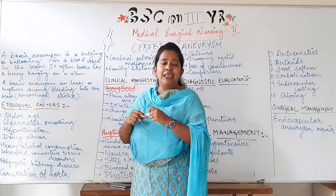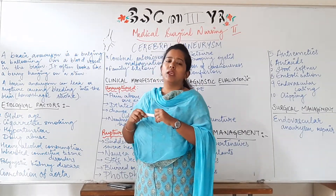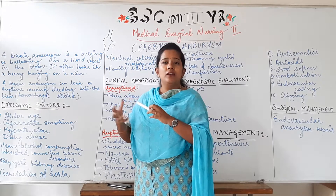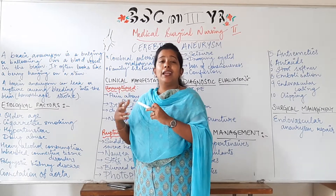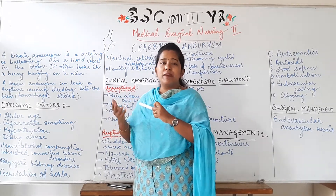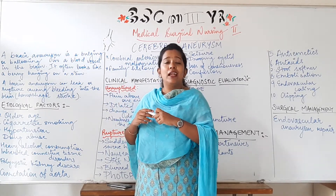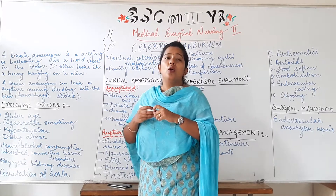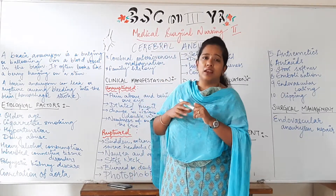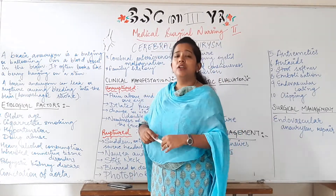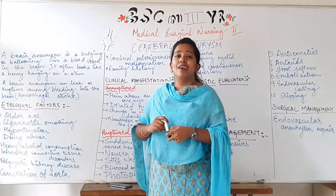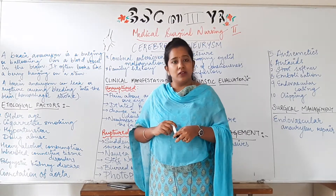In a ruptured or leaking aneurysm, blood starts collecting in the underlying spaces, and that can lead to hemorrhage. That condition of the brain is called Hemorrhagic Stroke.